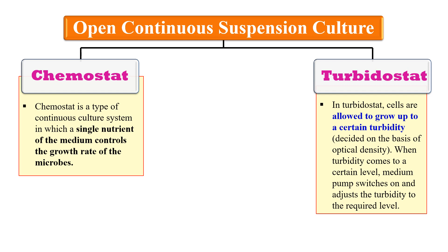In the turbidostat, cells are allowed to grow up to a certain turbidity, determined by optical density. Once the turbidity reaches a certain level, the media pump switches on and adjusts the turbidity to the required level by adding fresh media. So in the turbidostat, fresh media is added once the culture reaches a predefined turbidity. In the chemostat, a single nutrient controls the growth rate, while in the turbidostat, turbidity controls the growth rate.